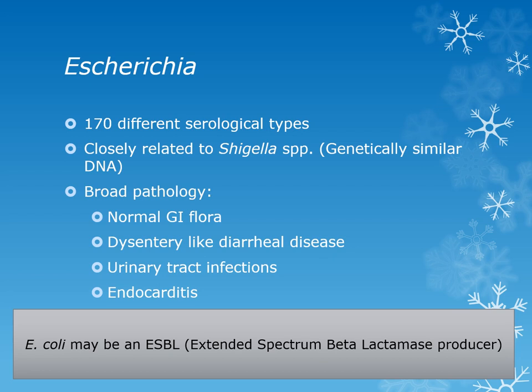There are 170 different serological types for Escherichia, and they are biochemically closely related to Shigella. In fact, they're genetically similar in their DNA and are in the same tribe. They have a broad pathology. Most of the time Escherichia can be normal gut flora, unless they're a toxin strain like a Shiga toxin-producing strain. Escherichia can cause dysentery-like diarrheal disease, and it is the number one cause of urinary tract infections in women. It can also lead to other opportunistic diseases like endocarditis.